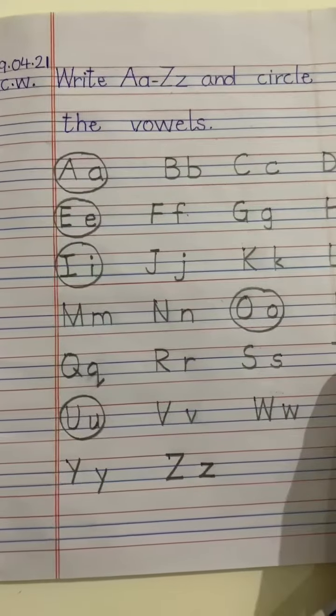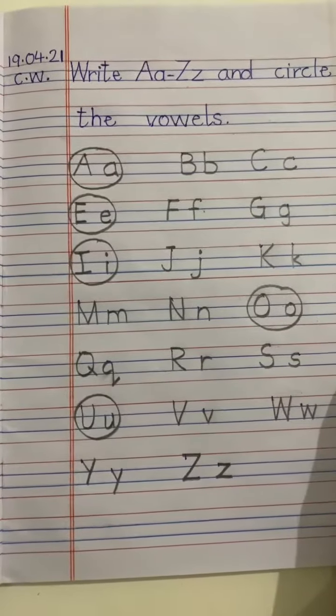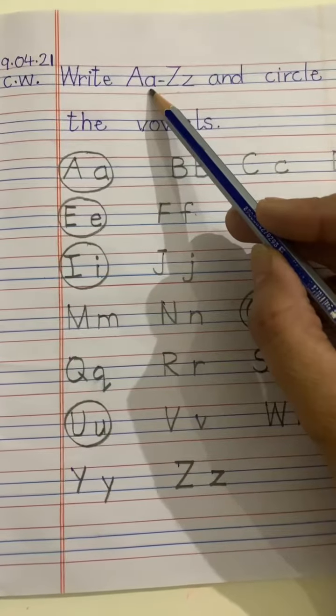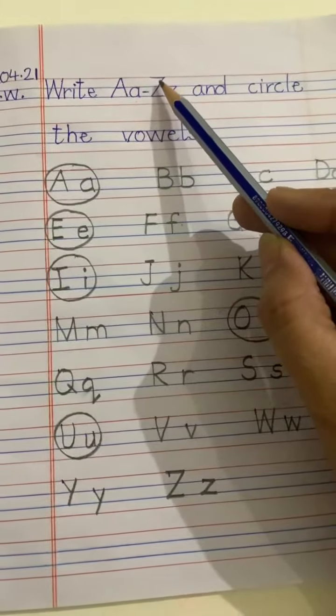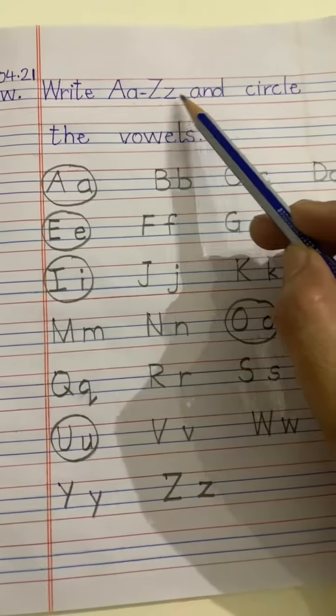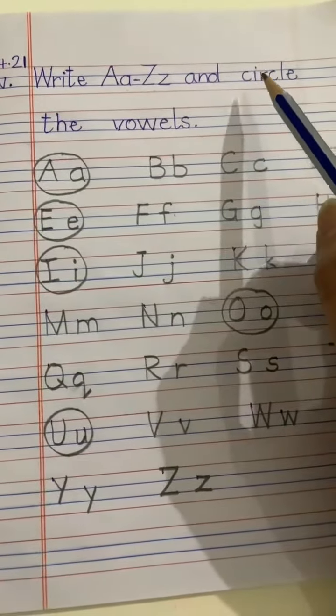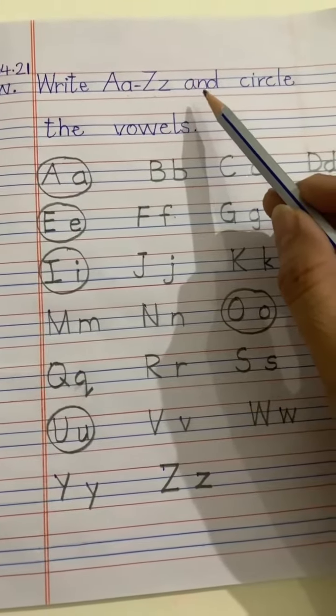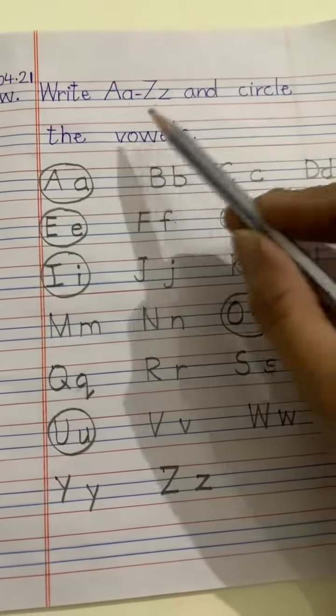Good morning, welcome you all in English class students. Today we are going to write capital and small letter A to Z. We are writing capital and small both the alphabets. Okay, and after writing A to Z, you have to circle the vowels.